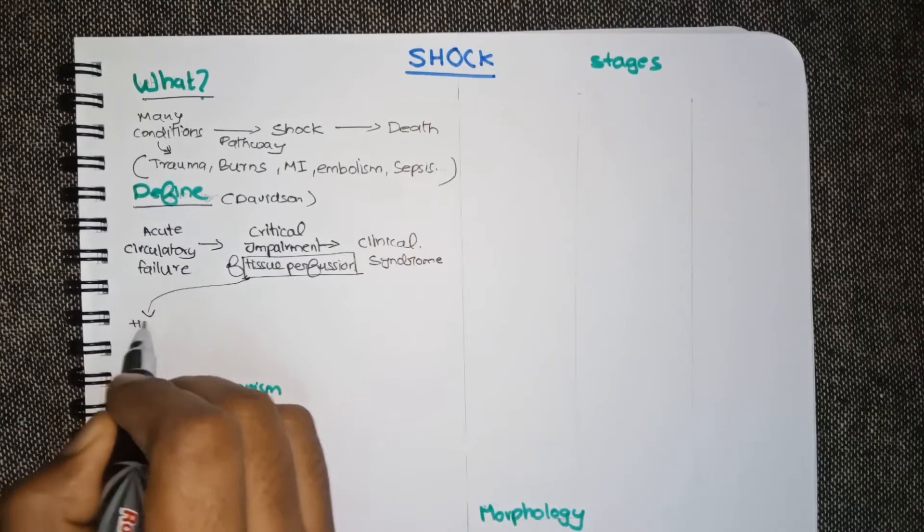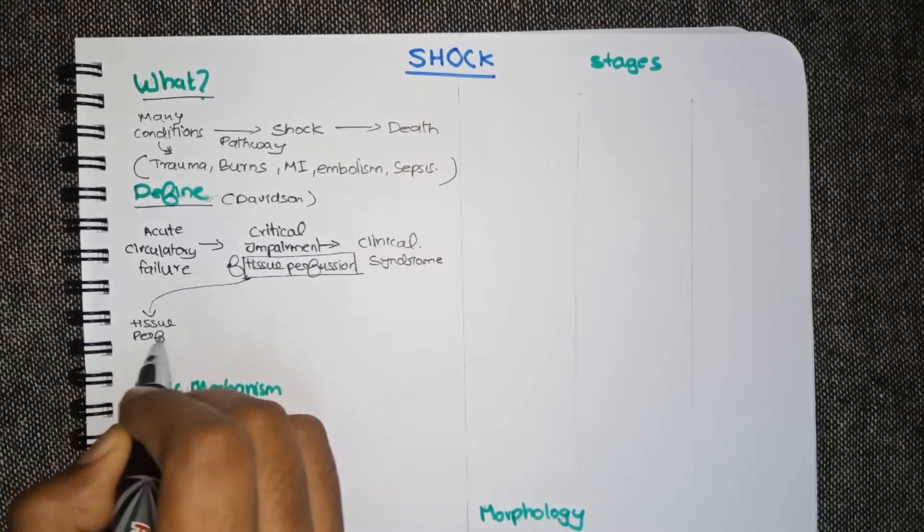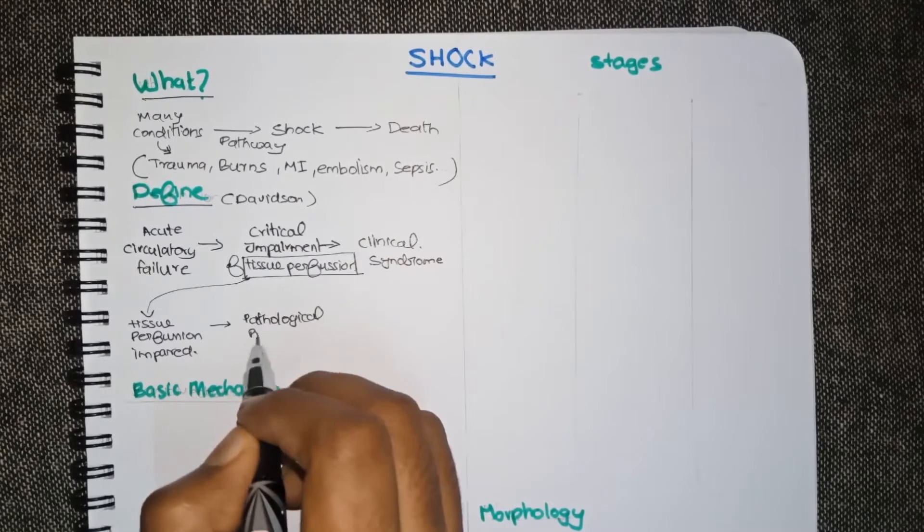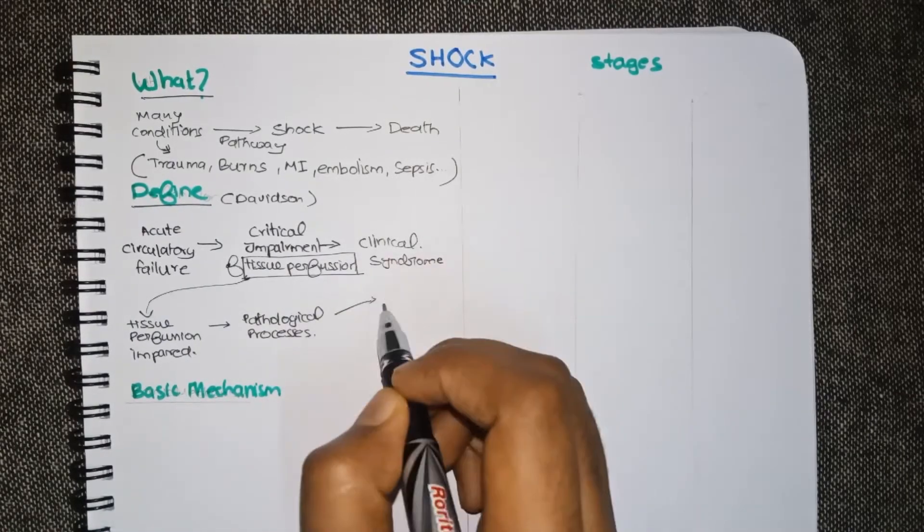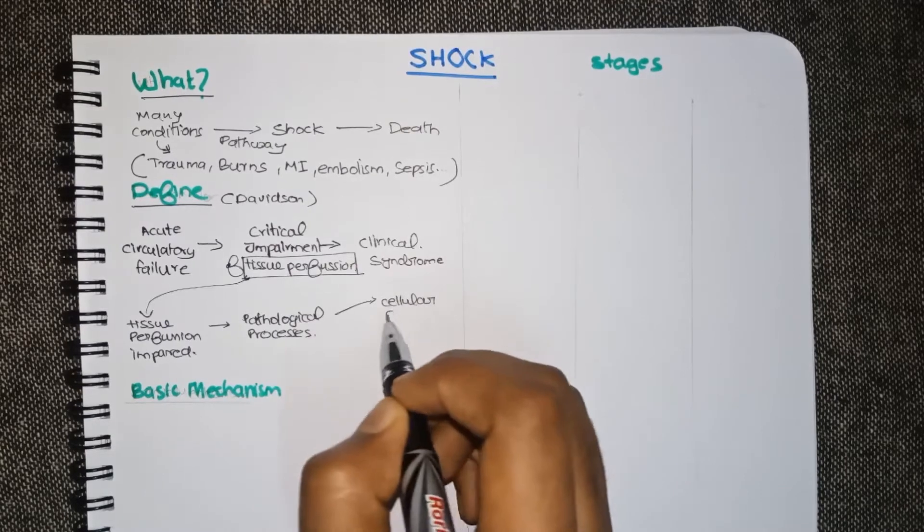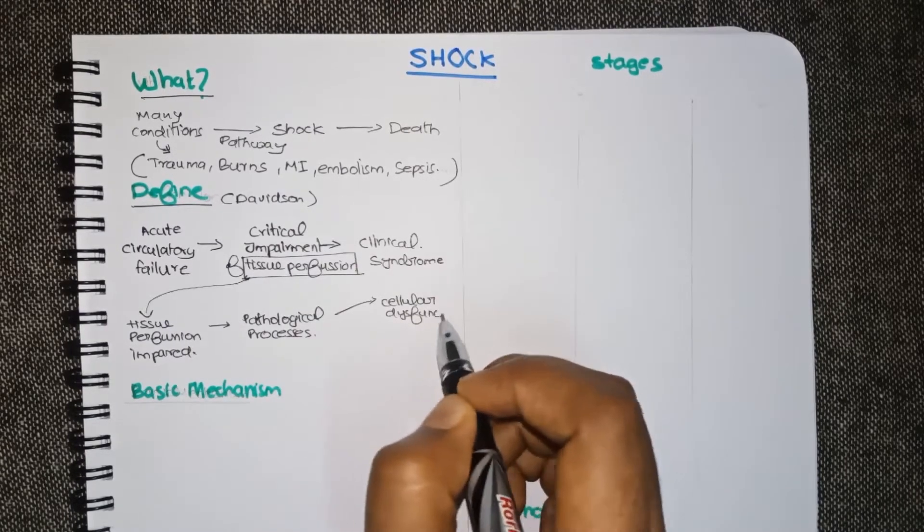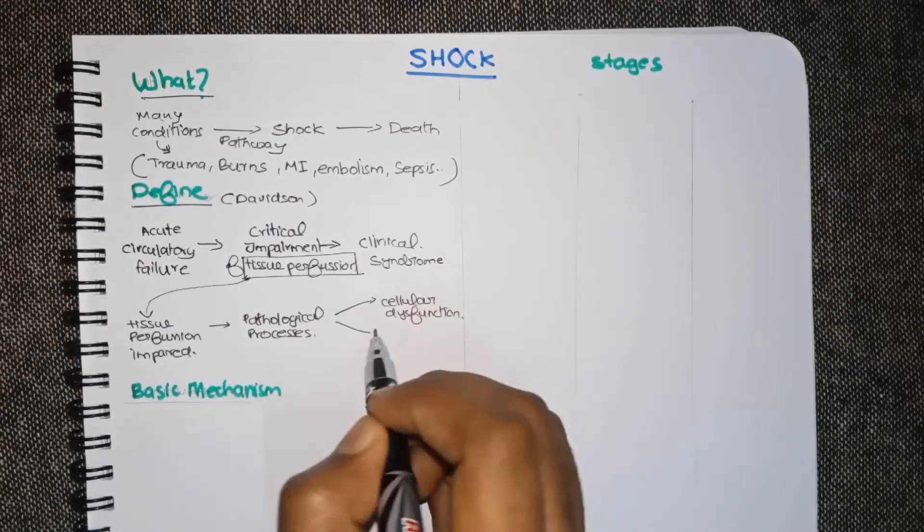Another definition that concentrates on tissue perfusion is that shock is a pathological process due to tissue perfusion impairment that results in cellular dysfunction and organ failure.